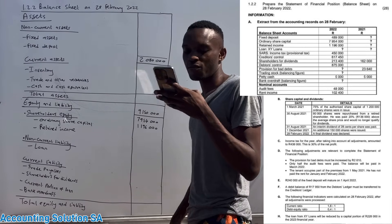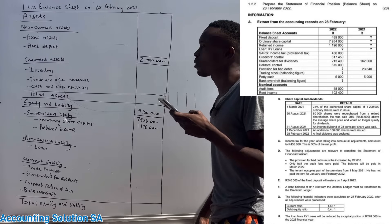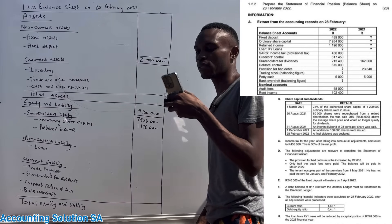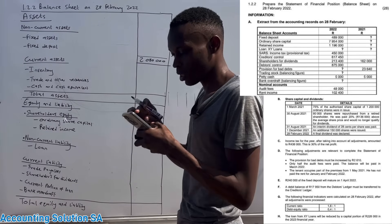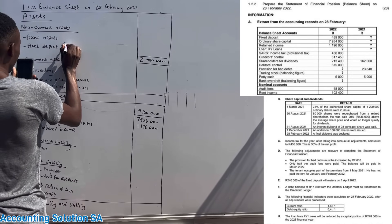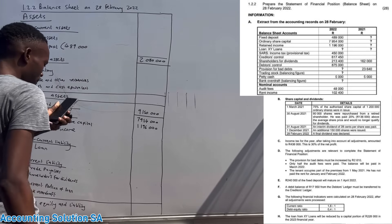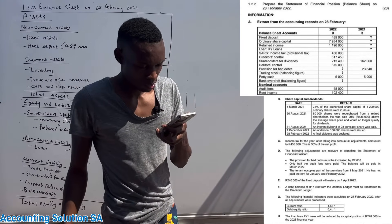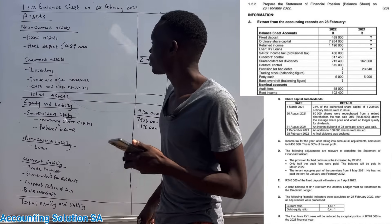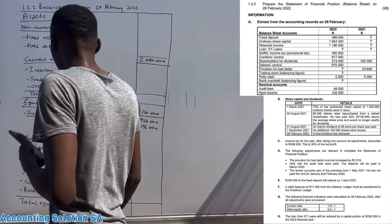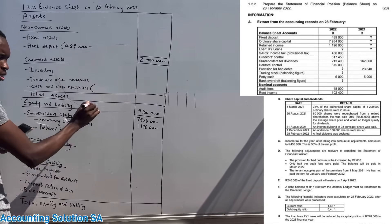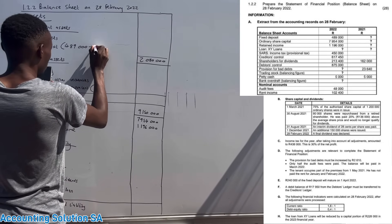Let's start with the fixed deposit. On the balance sheet we have it listed under fixed assets, but a fixed deposit is there. If you check transaction E, 240,000 of fixed deposit will mature on 1 April 2022 — within 12 months. So we need to subtract it from fixed deposit and put it into cash and cash equivalents: minus 240,000.